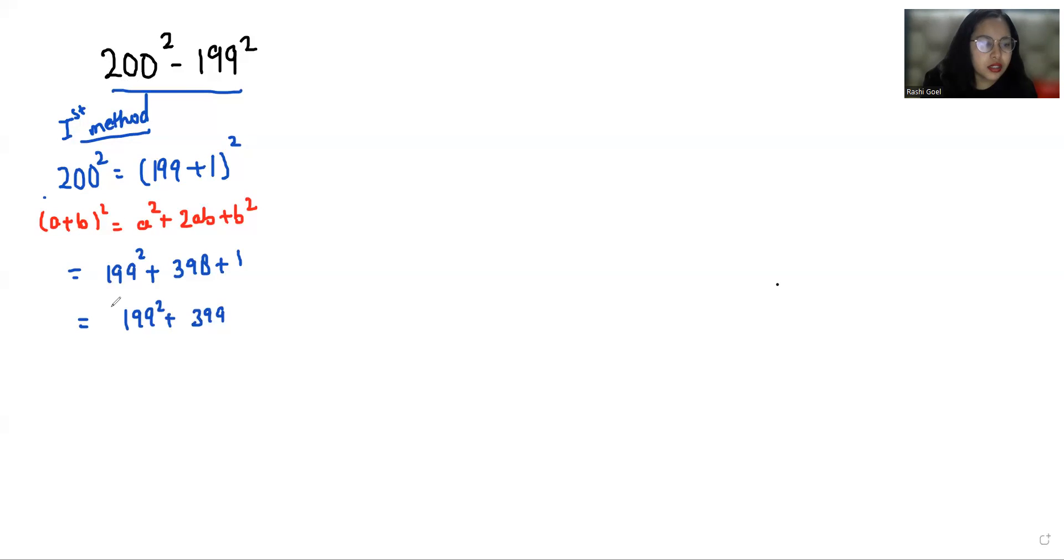Now our question is 200 square minus 199 square. So we can write this as in place of 200 square, 199 square plus 399 and this left 199 square. So we can cancel out this. So what is our answer? 399.